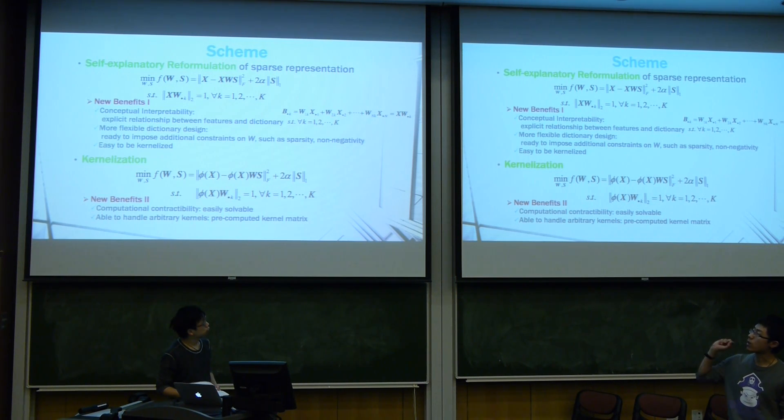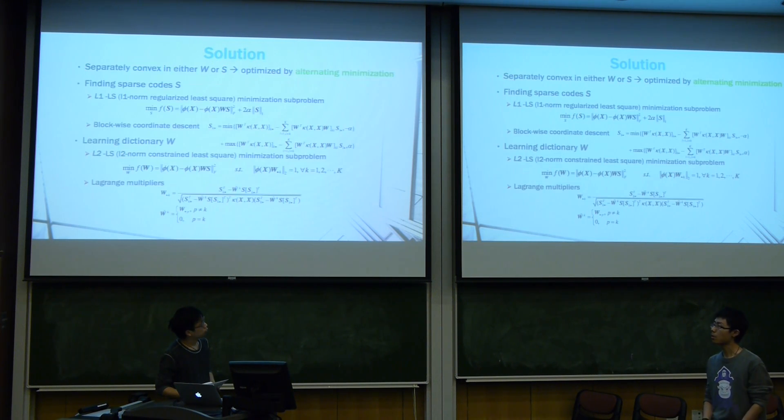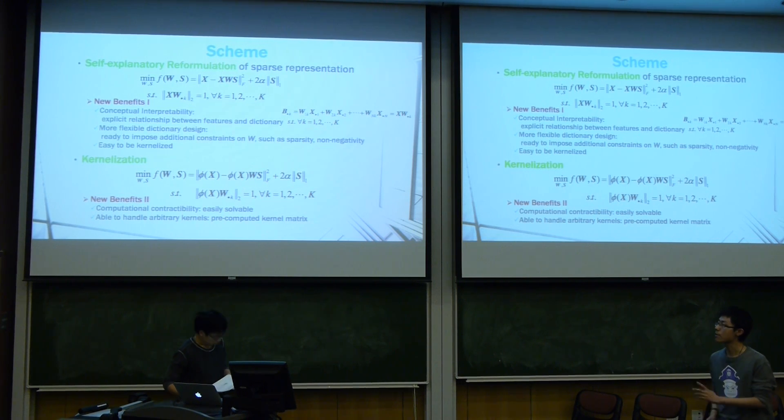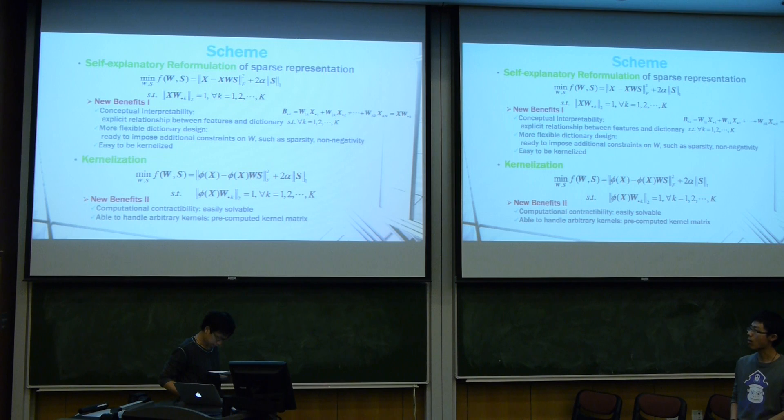So we introduced the kernel trick into this new formulation and get a new kernelized self-explanatory sparse representation. Apart from the before, we also have some new benefits. First, this computation is tractable, which means it can be easily solved. Second, the kernel matrix can be pre-computed, which means it is able to handle arbitrary kernels.